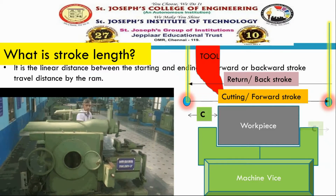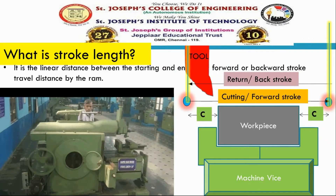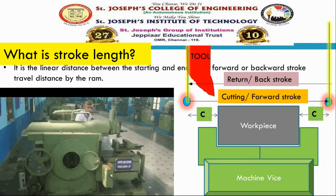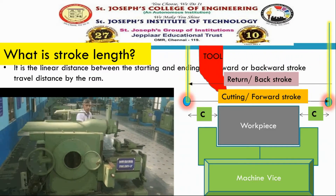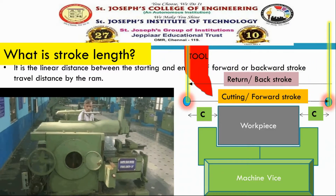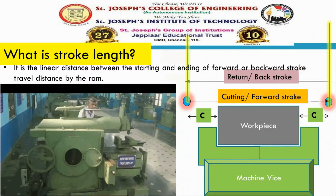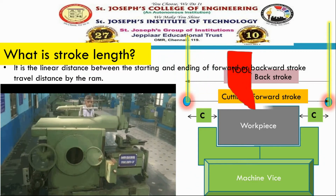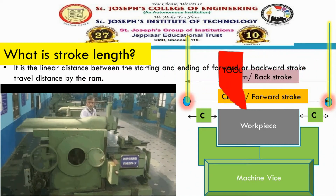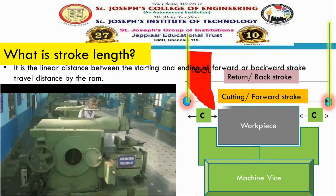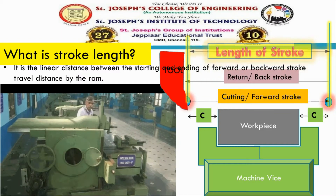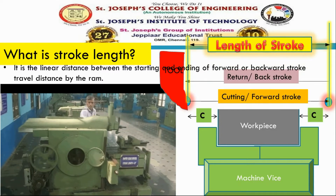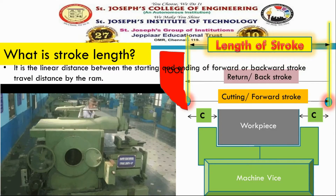The right-to-left movement is known as the return or backward stroke. Here we have some clearance. We have to give clearance in two directions — that is behind as well as in front of the workpiece. Including this clearance distance, we are going to calculate the stroke length. The stroke length is the linear distance between the starting and ending of a forward or backward stroke, traveled by the ram.